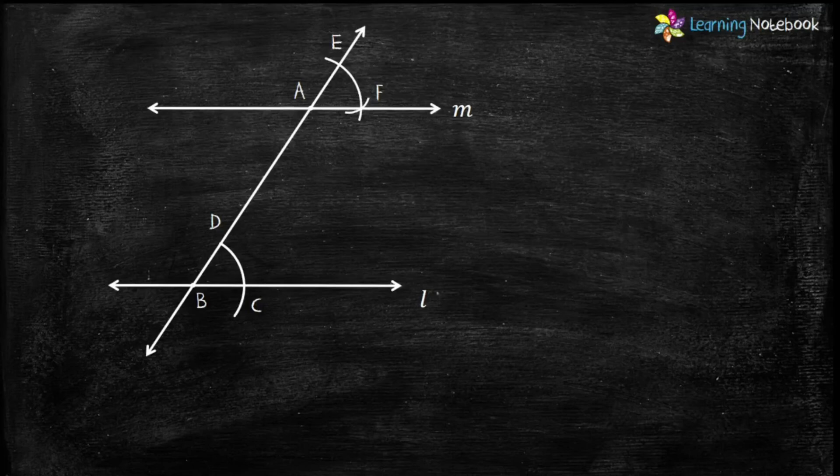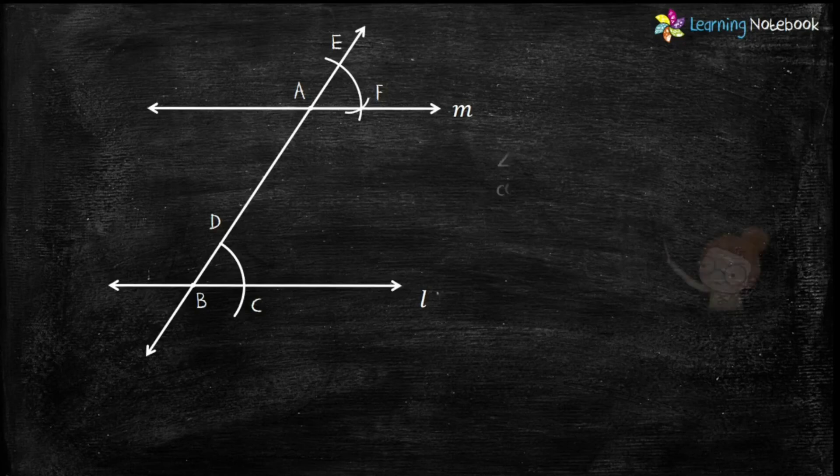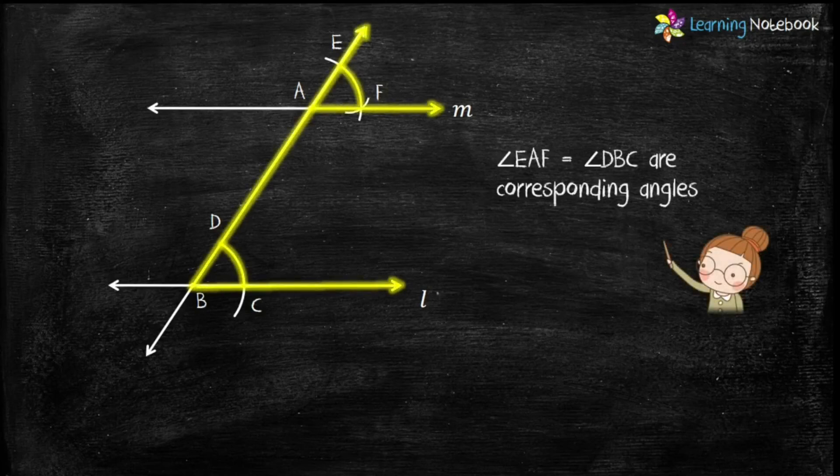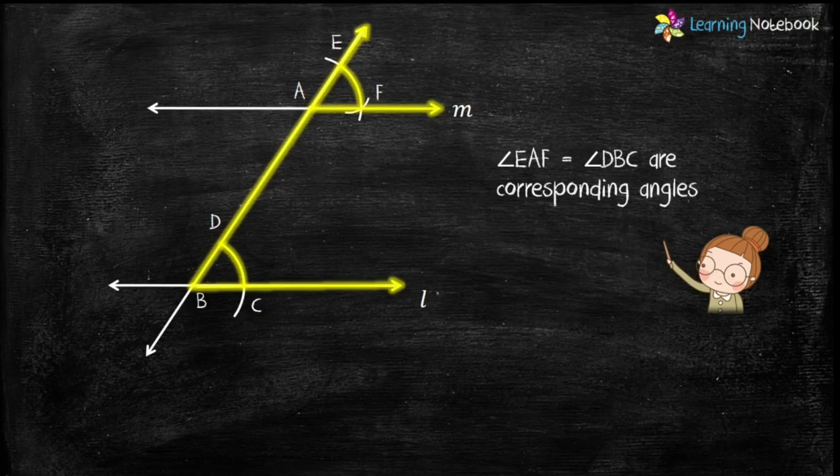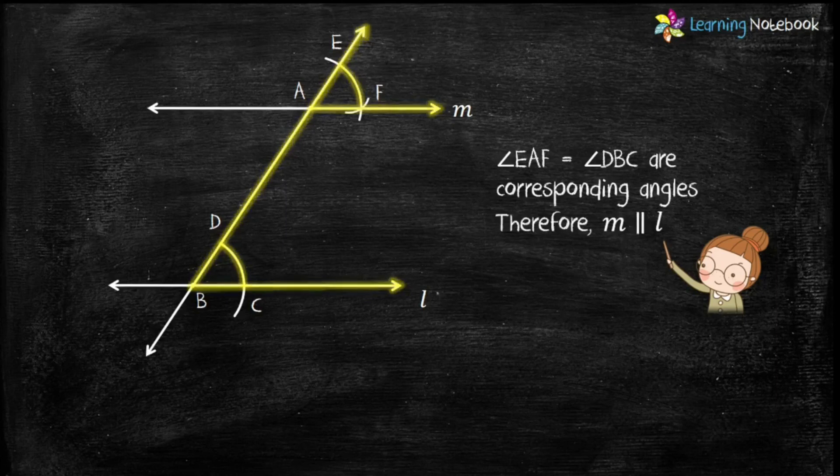Now, why is M parallel to L? Because we have constructed angle EAF equals to angle DBC which are corresponding angles. Therefore, line M is parallel to line L.